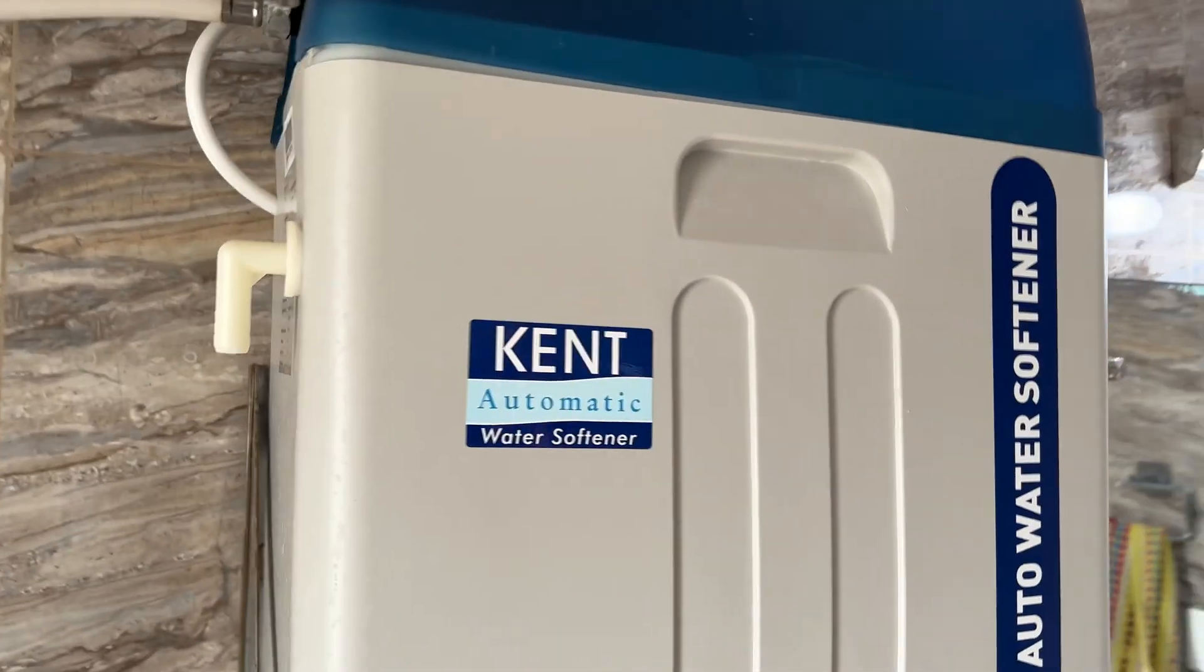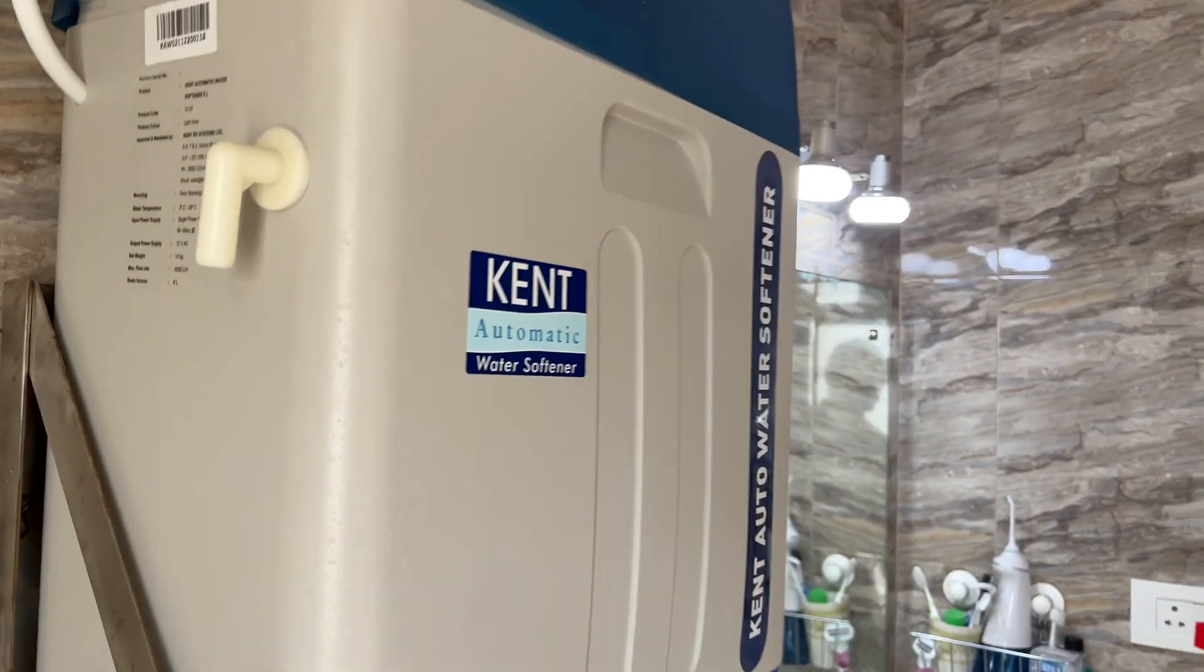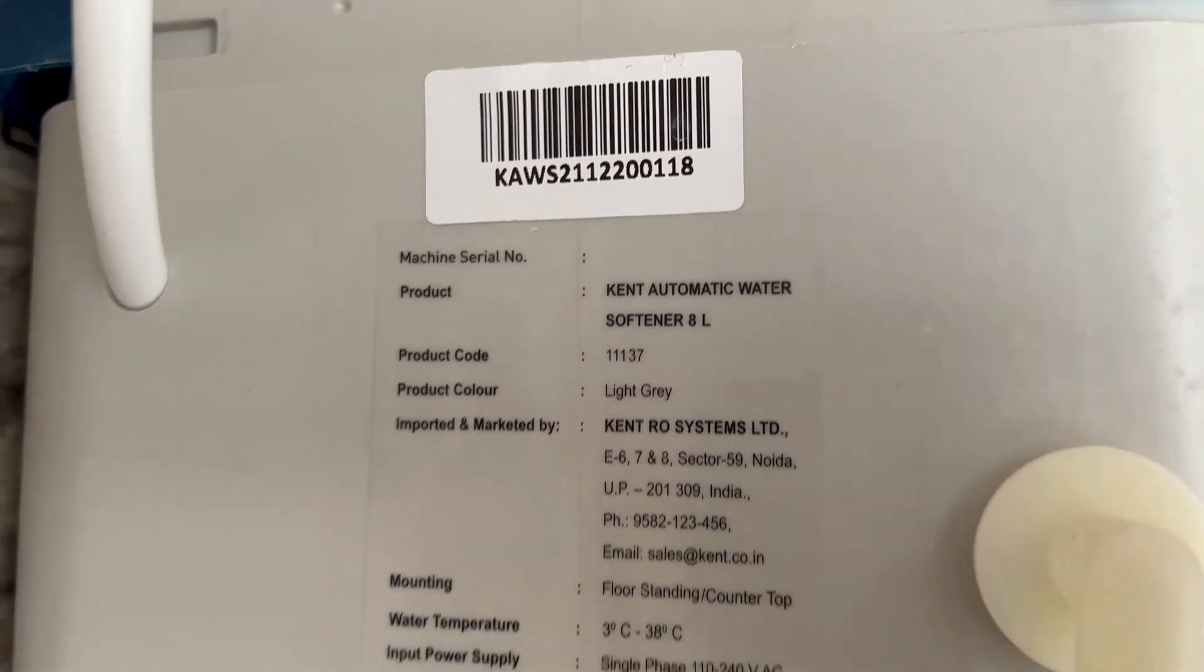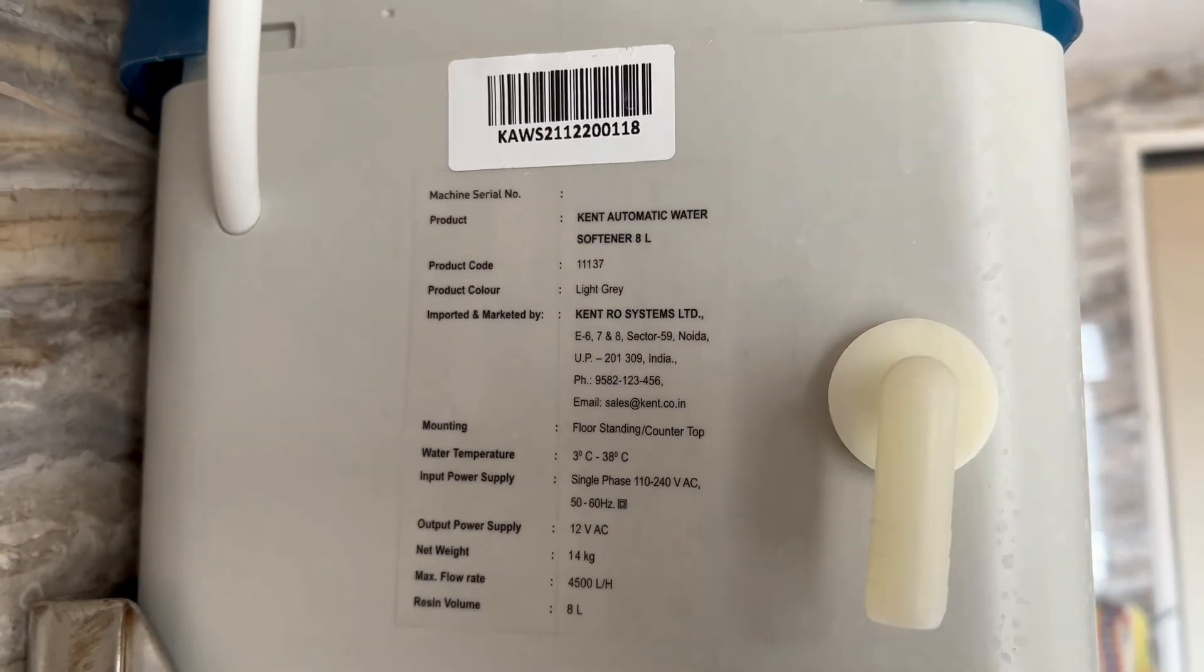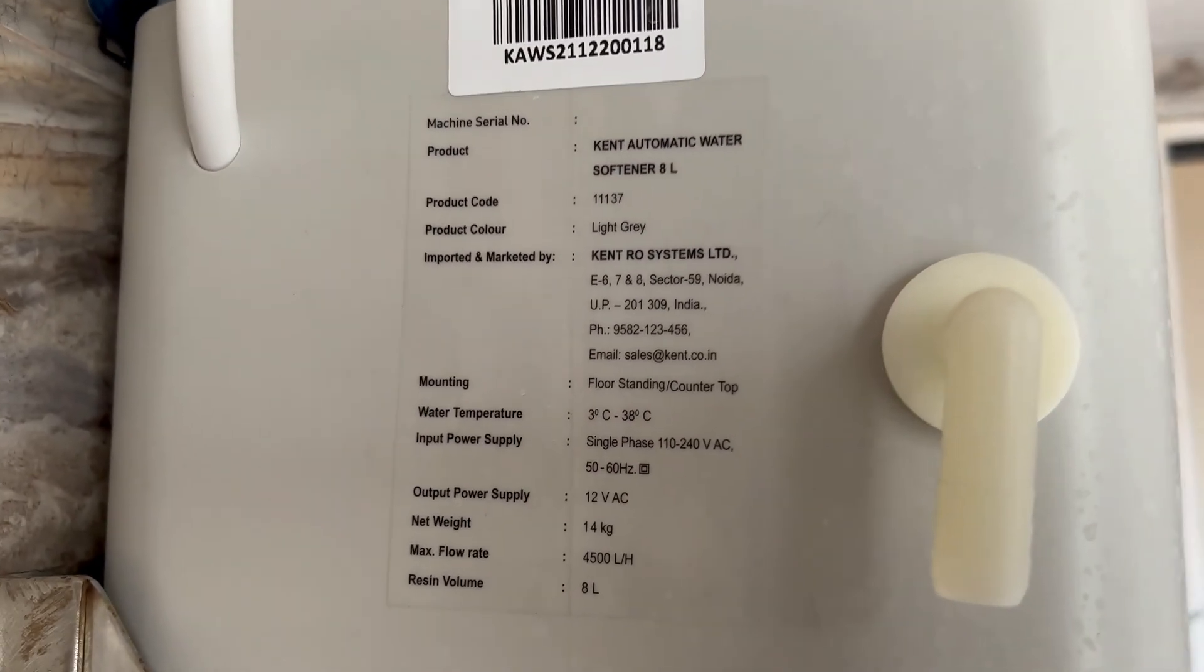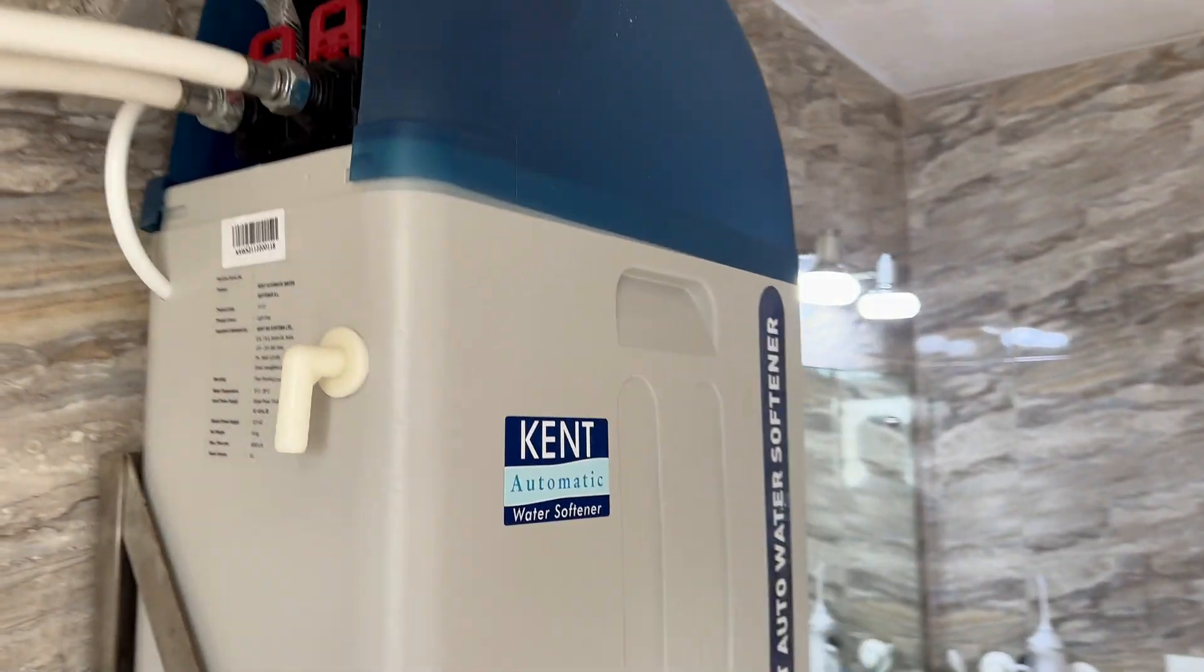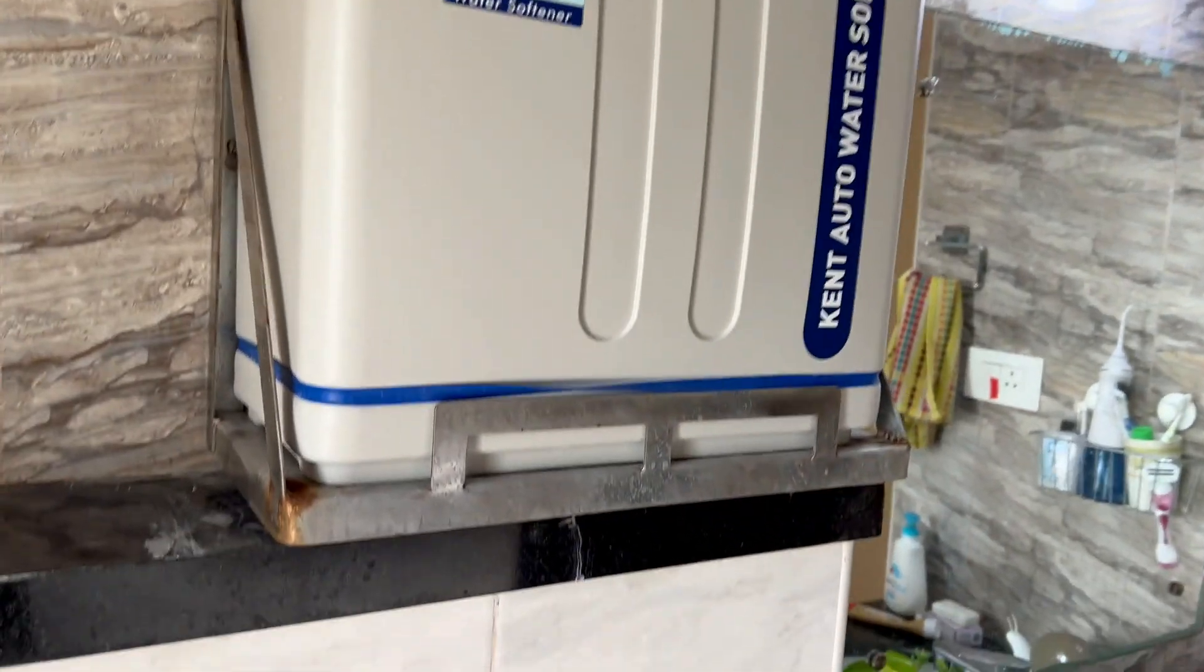This water softener is for your bathroom to convert your hard water to soft water that you can use. As you can see here in the details mentioned this is the 8 liter capacity model. You have the power supply ratings for this model. So yes it does need electricity to run since it's an automatic water softening machine.